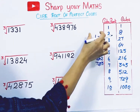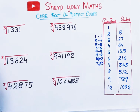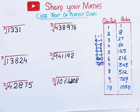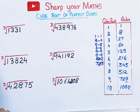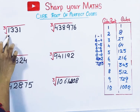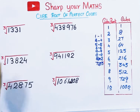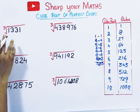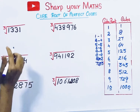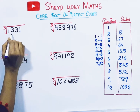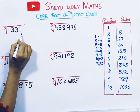You should know these things to find the cube root. So let's start finding the cube root of these perfect cubes. Take the first number and divide it into groups — take the last 3 digits as one group.